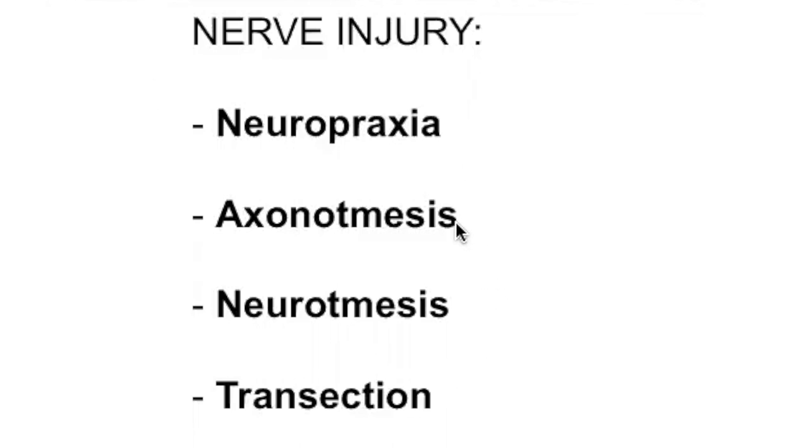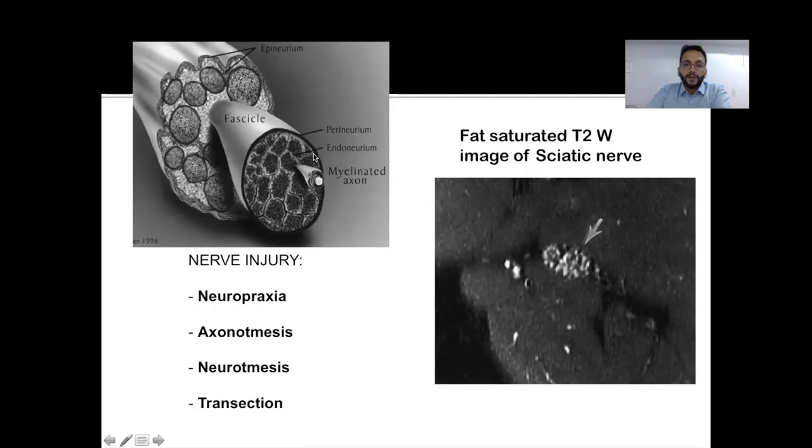Moving on to the next type which is slightly more severe, axonotmesis. In axonotmesis, we have got partial disruption of some of the axons. The endoneurium might be disrupted. However, the nerve fascicles are intact and the perineurium is intact. So these patients will have some mild neuro deficit. Most of them will have complete recovery. Some of them will have mild neuro deficits. Again, surgery is not largely indicated in these patients.